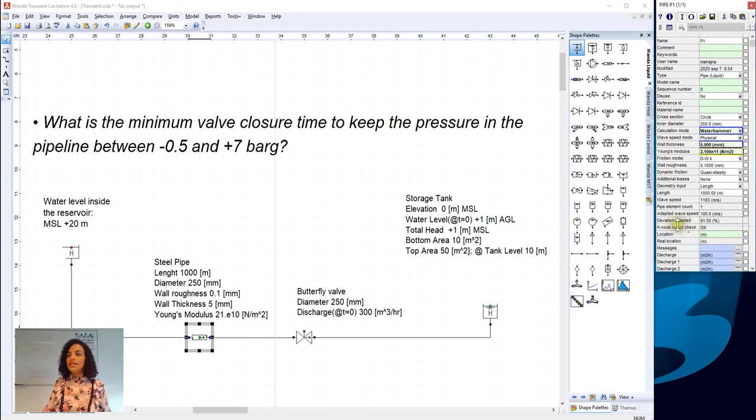However, the adapted wave speed equals 100 meters per second, which results in a deviation in the adapted wave speed value of 92%, which is a big deal. This is because we don't have the accurate time settings in our hydraulic model. And this results in one pipe element in our model.